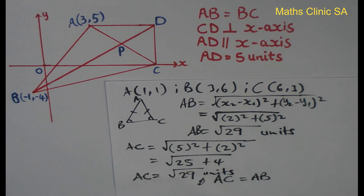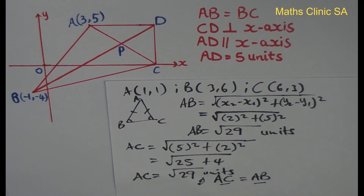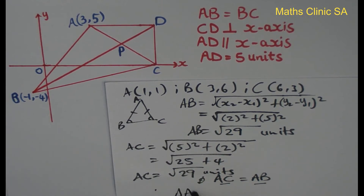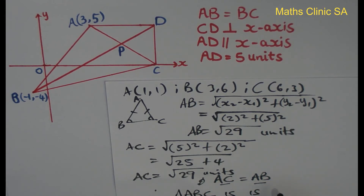We should always write the units — centimeters, meters, or kilometers — whatever the units are. So AC equals AB, therefore triangle ABC is isosceles.